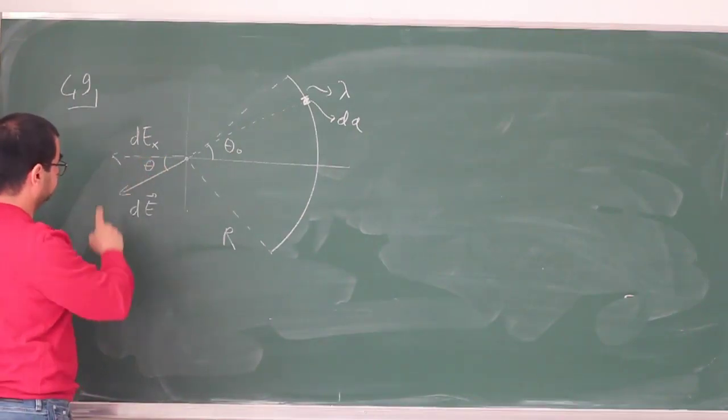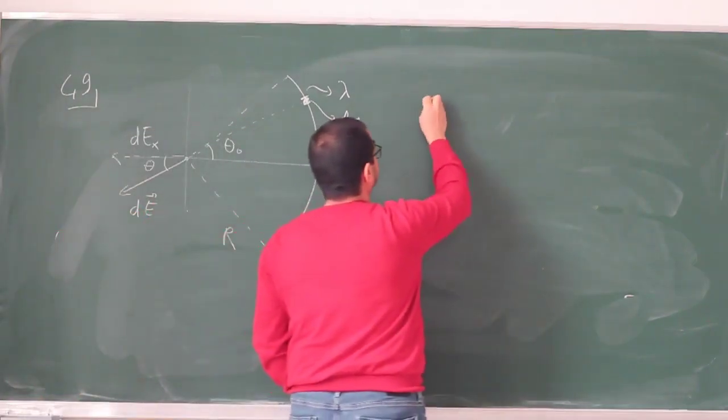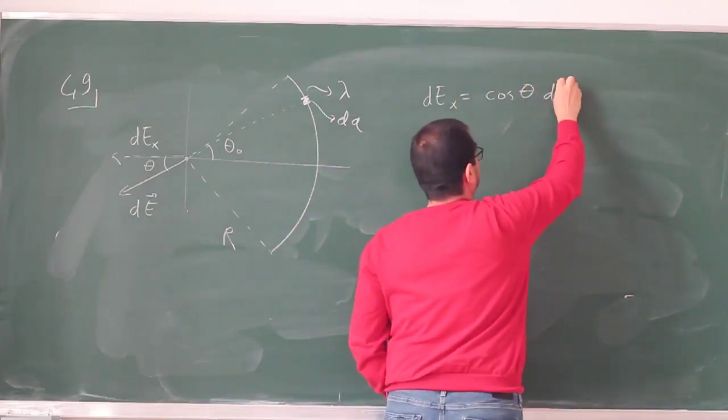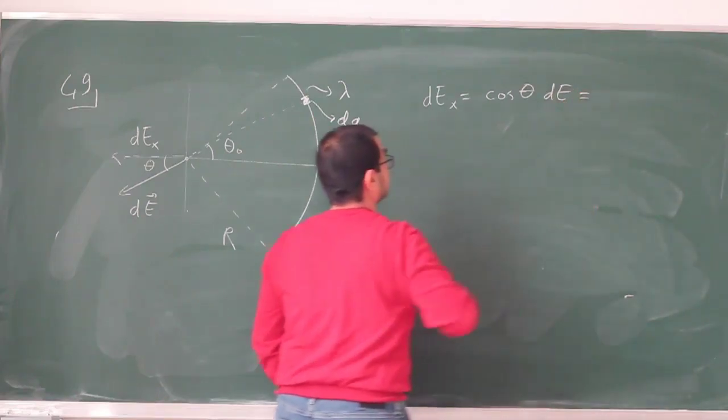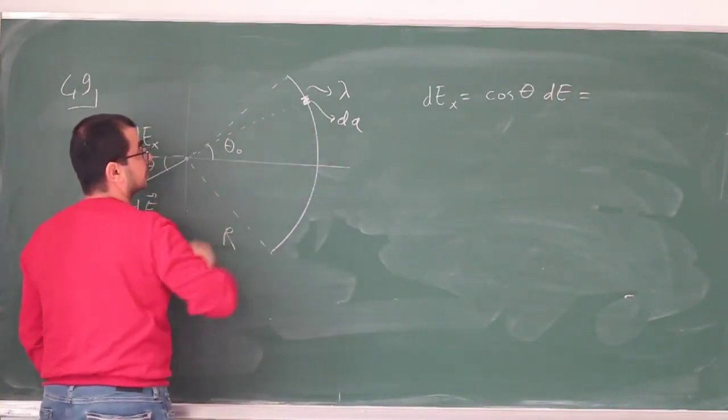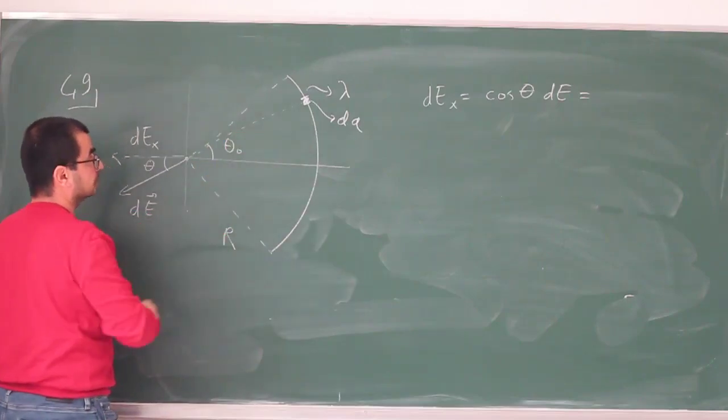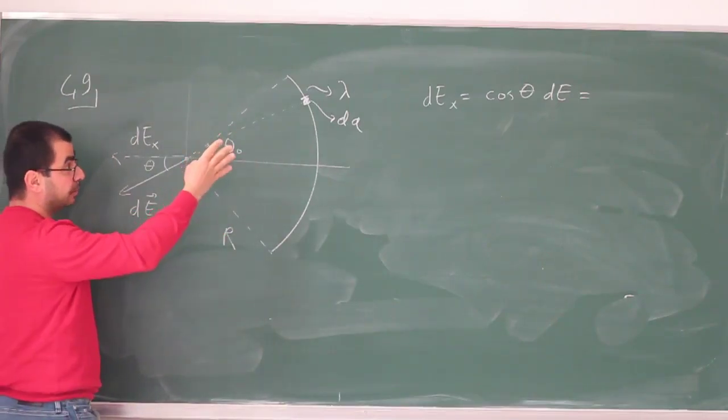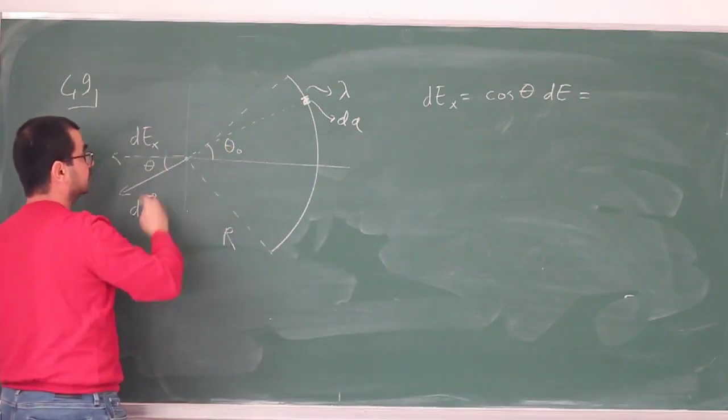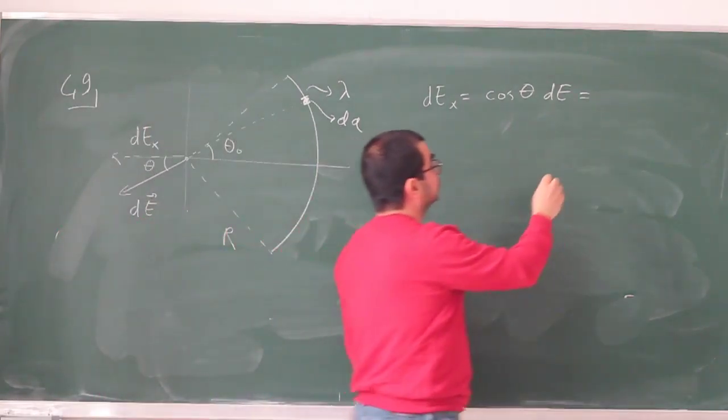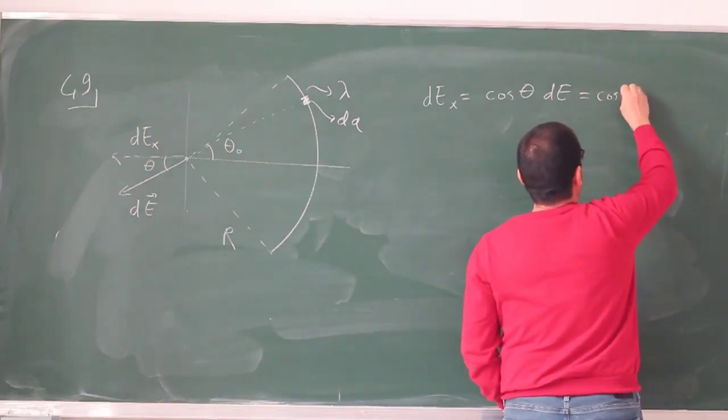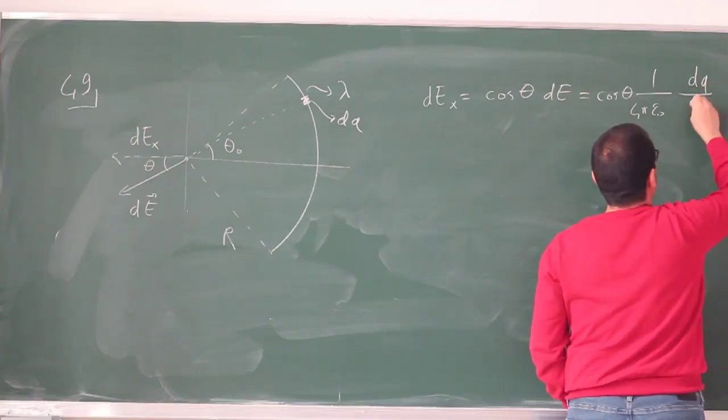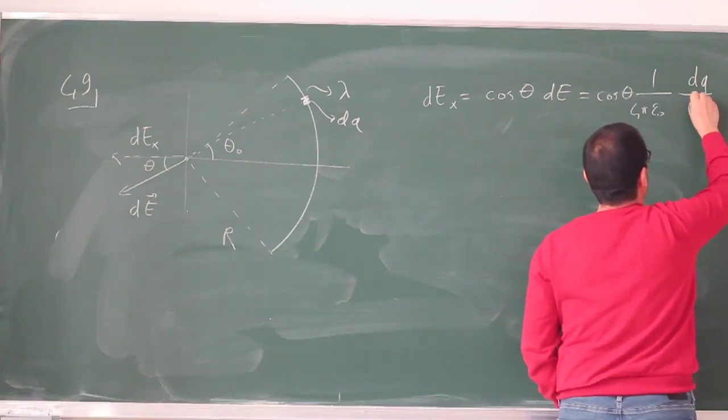That dEₓ is going to be just cosine θ times dE, and that dE, the infinitesimal electric field due to this dq, is going to be the same for all of them because they are all equidistant. So remember that dE is the magnitude of the electric field. Because they are all equidistant from this point, it's just going to be cosine θ times 1 over 4πε₀ times dq divided by capital R squared.